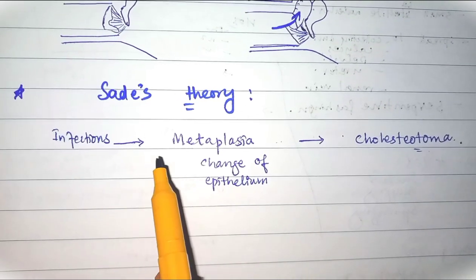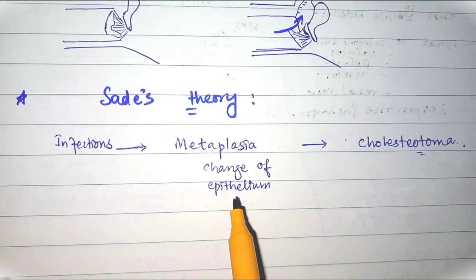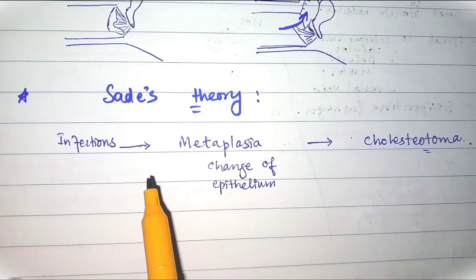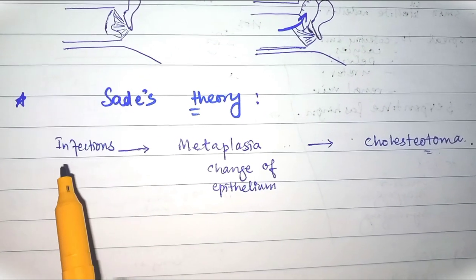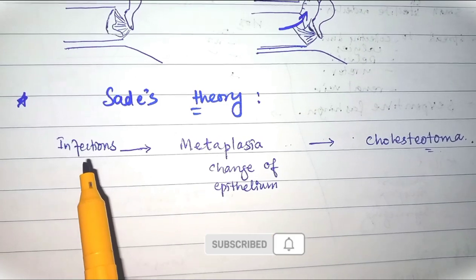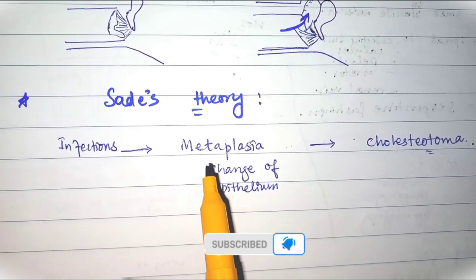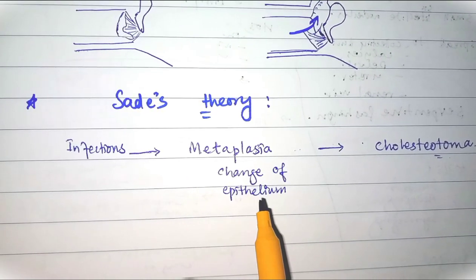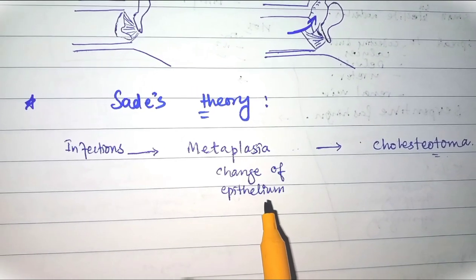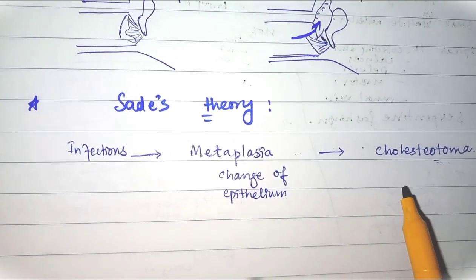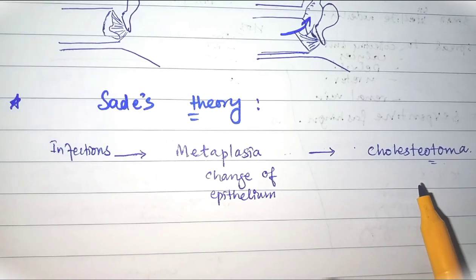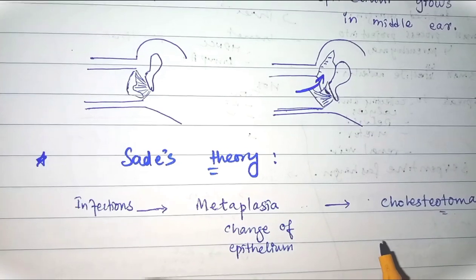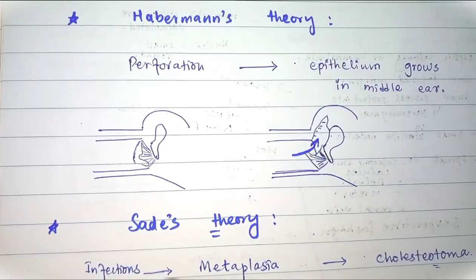The final theory is Sade's theory, which introduces the idea of metaplasia — a change of epithelium. Similar to what occurs in respiratory mucosa in other conditions, when there is repeated infection in the ear, this repeated infection causes metaplasia of the middle ear mucosal lining. The respiratory-type epithelium undergoes metaplasia due to repeated infections and is transformed into squamous skin epithelium in the middle ear. So these are the theories of the formation and origin of cholesteatoma.